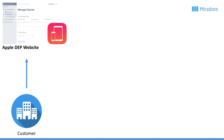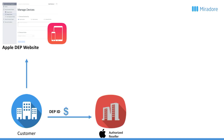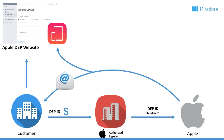Once you have registered on the Apple DEP website, you will get a DEP ID, which is basically just your customer ID within the Apple DEP system. From now on, when you want to order iOS devices, you only have to make sure that you get in touch with an authorized Apple reseller and give this reseller your DEP ID when you order. The reseller will then pick your devices and send the information about which devices have been picked, alongside your DEP ID and their reseller ID, to Apple. Apple will register the devices in your DEP account and send you an email telling you that these devices have now been registered.